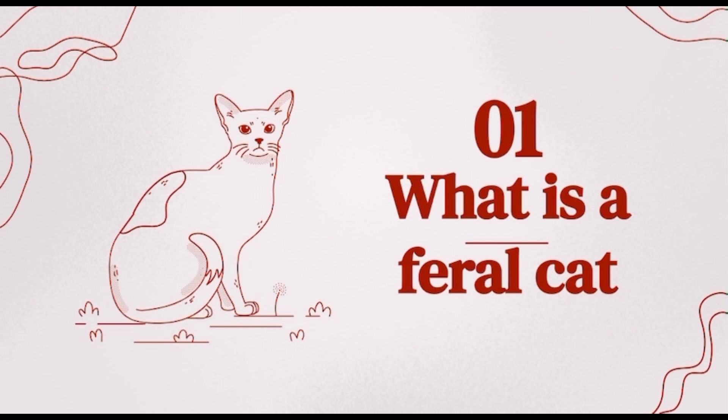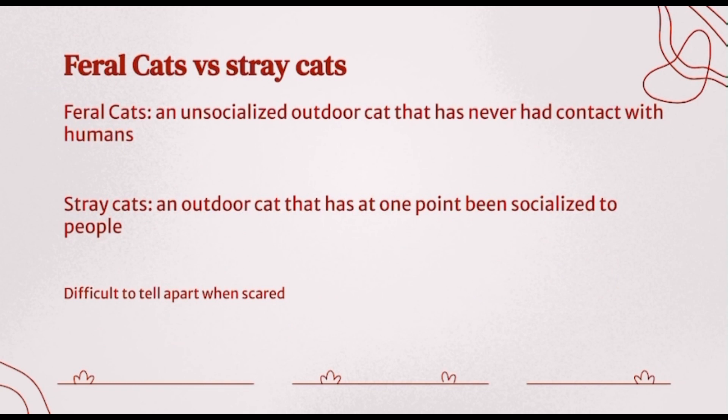First we are going to discuss what exactly is a feral cat. A feral cat is an unsocialized outdoor cat that has never had contact with humans, or at least never had positive contact. Stray cats, however, are also outdoor cats but at some point in their lives they have been socialized to people. When cats are scared or you are attempting to capture them, they all appear about the same, so it is very important to let a cat settle a little bit before you are really able to tell the difference.